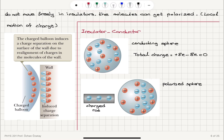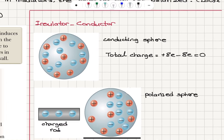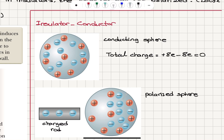The situation is different when we have an insulator and a conductor. Consider a conducting sphere with 8 positive charges and 8 negative charges — total charge is zero, so it is electrically neutral. From our picture of metals, we know that the electrons are free to move, whereas the positively charged ion cores are immobile.